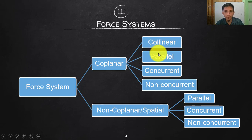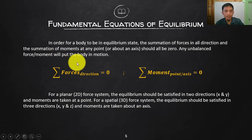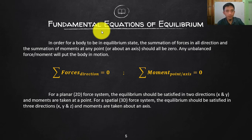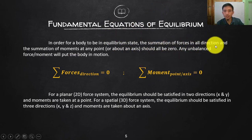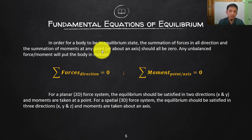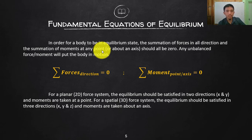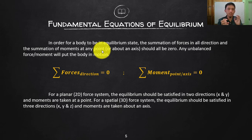Now for the fundamental equations of equilibrium. In order for a body to be in equilibrium, the summation of forces in all directions and the summation of moments at any point must all equal zero. In mechanics you may have only used planar or 2D force systems, but in Theory of Structures we will consider 3D systems, for example the forces acting on each member of a building frame.